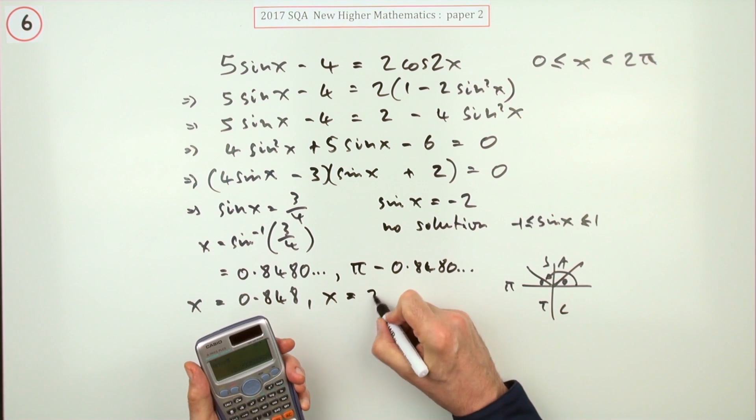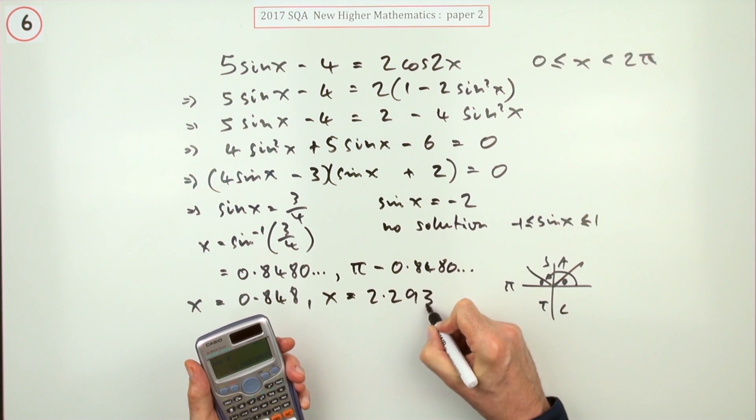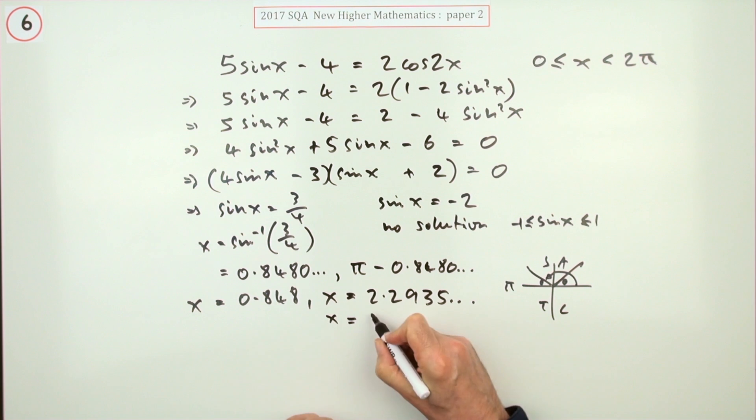2.2935 and so on, so I'll just round that off to 2.294. You shouldn't need to write radians because that's implied by the absence of the little degree sign.